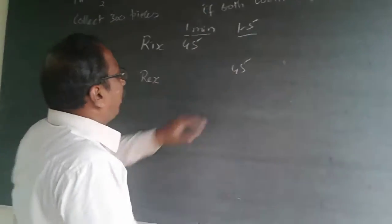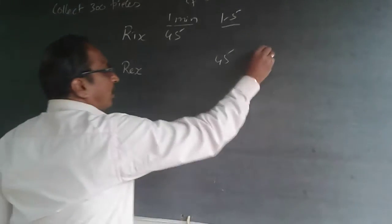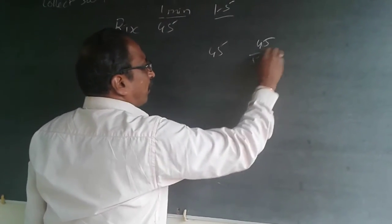So, if it is one and a half minute is 45, means one minute will do 45 divided by 1.5. 45 divided by 1.5 will be equal to 30.